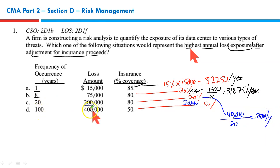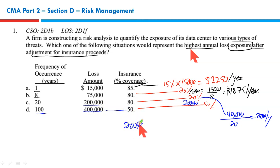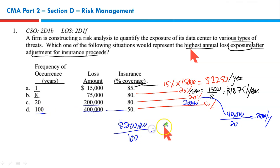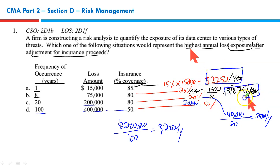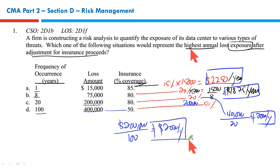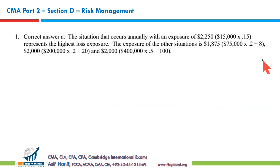And lastly, a $400,000 loss with a frequency of occurrence of 100 years. 50% is covered, 50% is not covered. In 100 years, on a yearly basis, that gives $2,000 per year. So comparing A, B, C, and D on a yearly basis, occurrence A has the highest loss — $2,250 per year. That makes A the correct option.